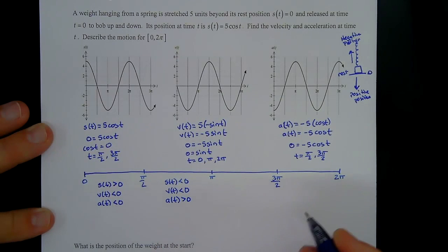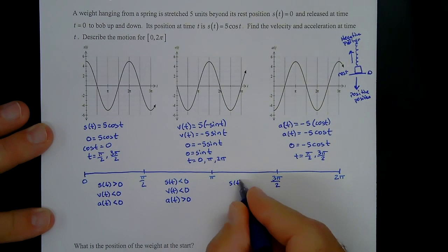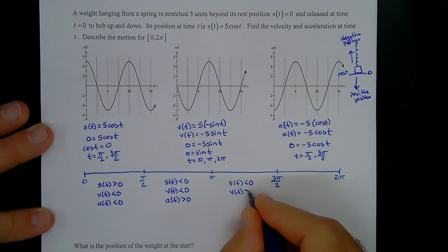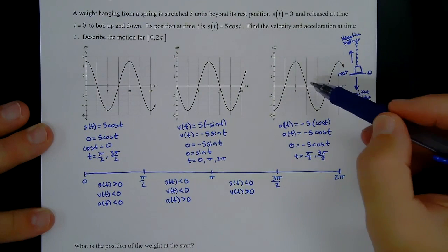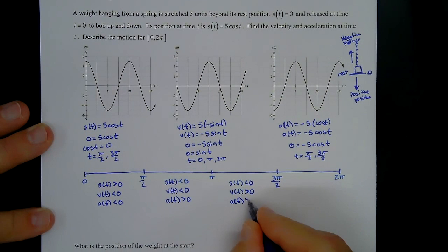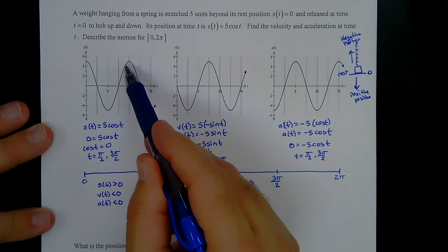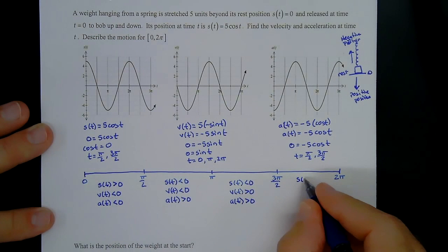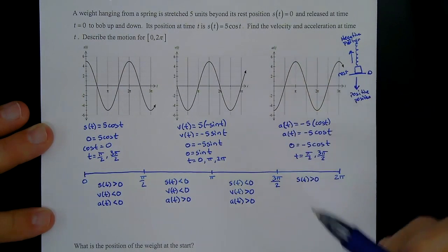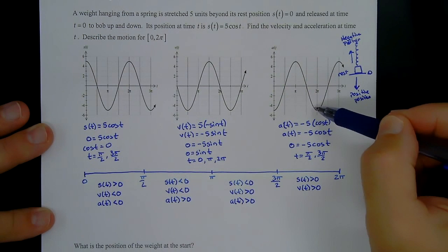From π to 3π/2: position is negative, s(t) < 0; velocity is positive, v(t) > 0; and acceleration is also positive, a(t) > 0. From 3π/2 to 2π: position is positive, s(t) > 0; velocity is positive, v(t) > 0; and acceleration is negative, a(t) < 0.